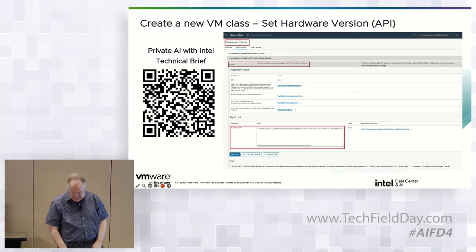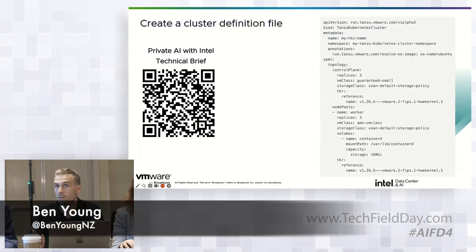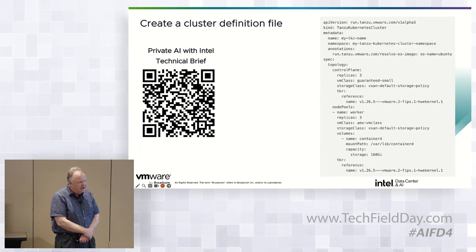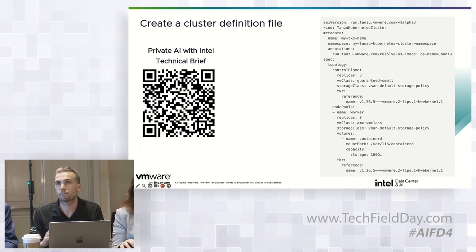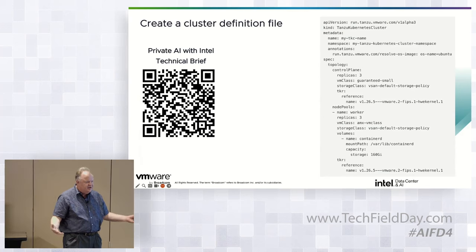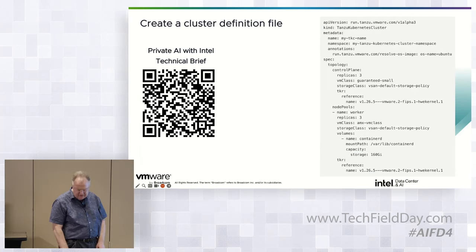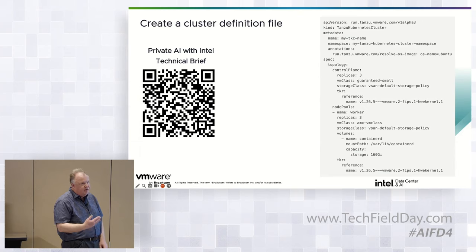Currently you can only trigger that programmatically through the automation API on vSphere. You only have to do it one time when you create the VM class, and then you're done. Any VMs that spawn from that class will inherit hardware version 20.